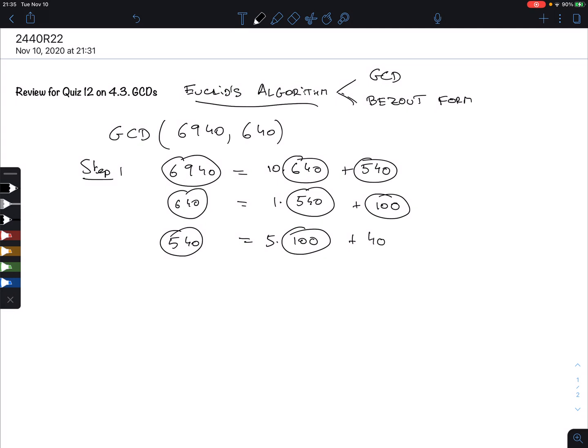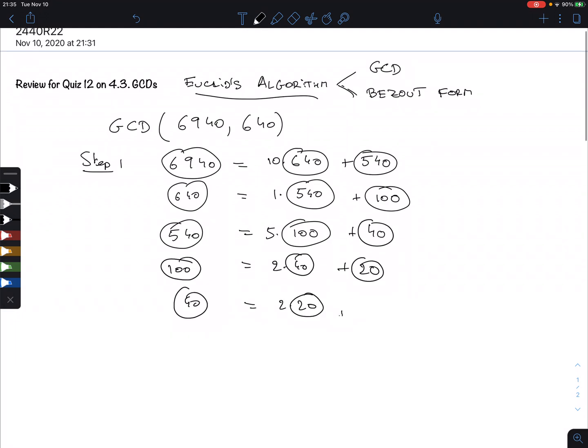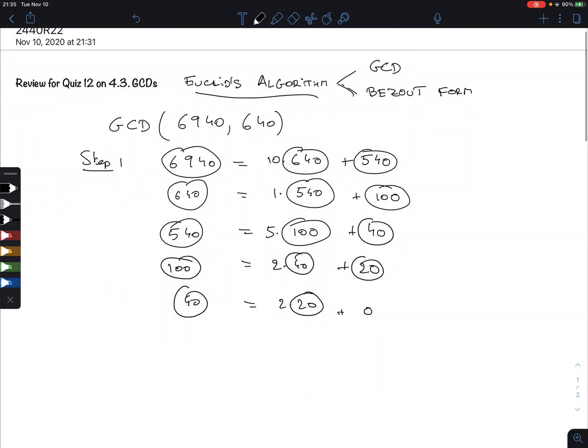We do the division algorithm on 540 and 100. That's 5 times 100 plus 40. Then we have 100 divided by 40, that's 2 times 40, which is 80, and we have 20 left. And then we do 40, which is 2 times 20 and 0 left.